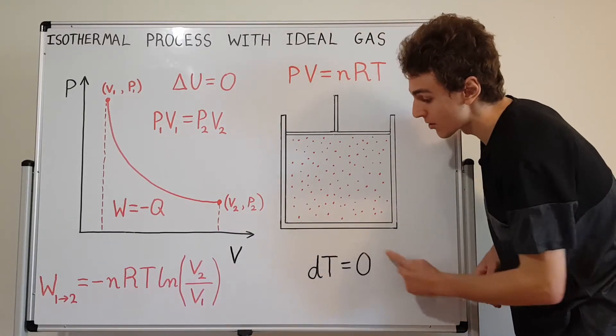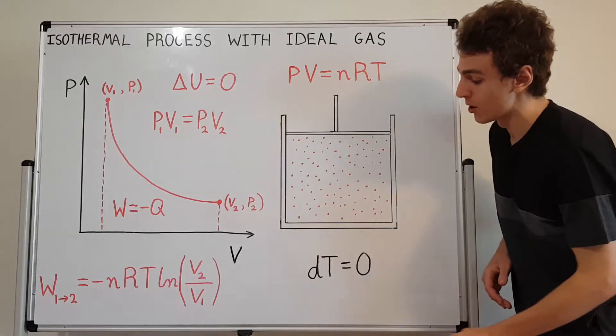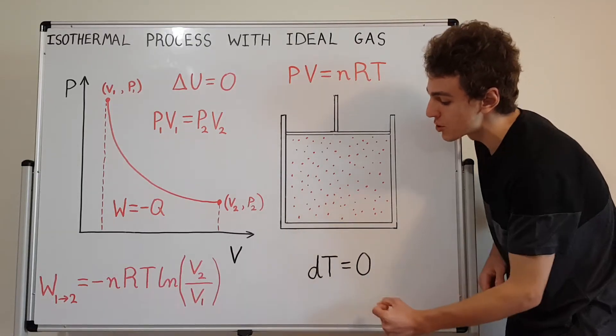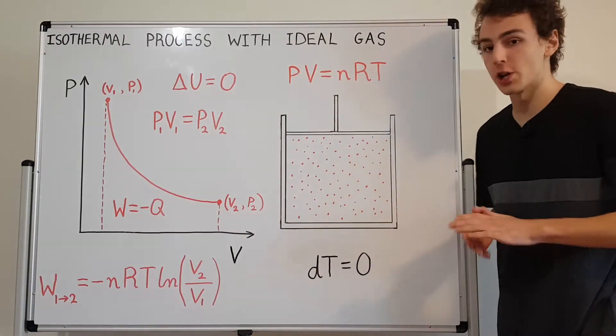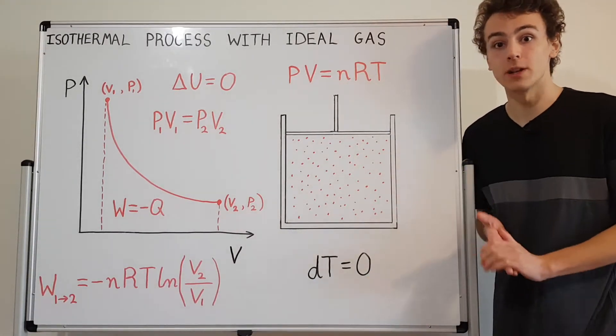Another way of summarizing the isothermal condition is dT equals zero, where an infinitesimal change in the temperature is zero for every point during the process. So the temperature is not changing. That's the isothermal condition.